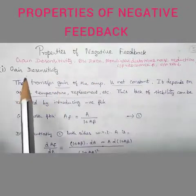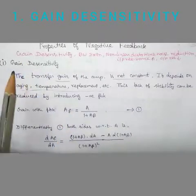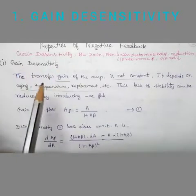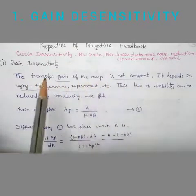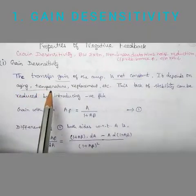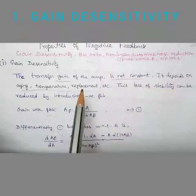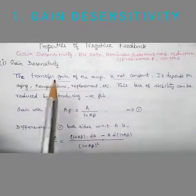First we see what is gain desensitivity. The transfer gain of an amplifier is not constant. The gain is not constant because of aging of the transistor, temperature variations, or replacement. If the transistor gets faulty and you replace it, the characteristics will change. These three parameters change the transfer gain.